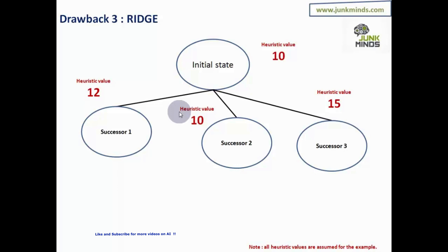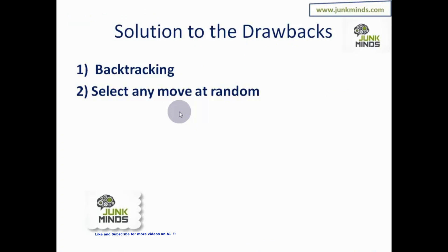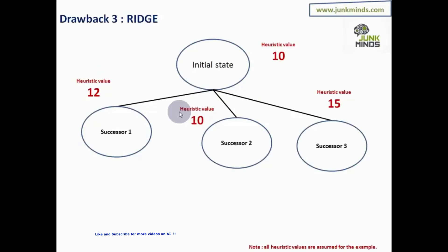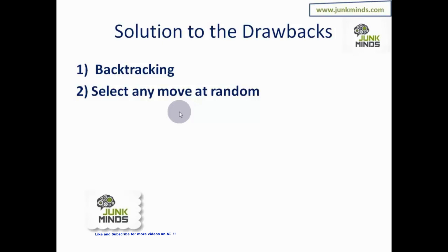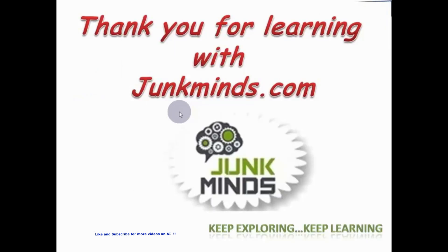There are two possible solutions to these drawbacks. One is backtracking — go back to an earlier node in the graph or tree and start evaluating further from there. The second is to select any move at random and continue evaluating. This is how we can overcome the drawbacks of hill climbing techniques. The numerical examples based on hill climbing will be covered in the next video. Thank you for learning!